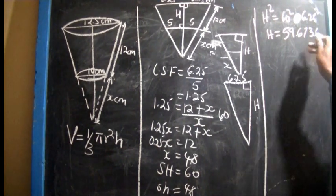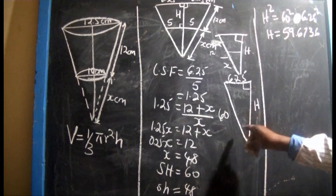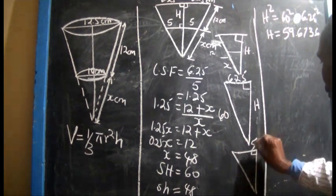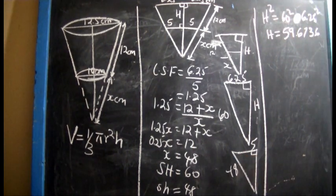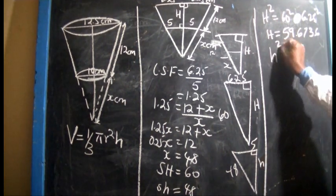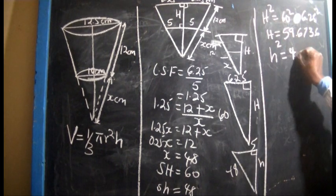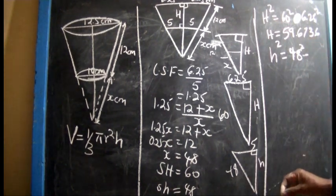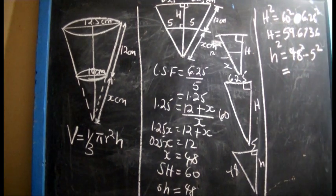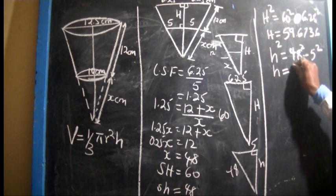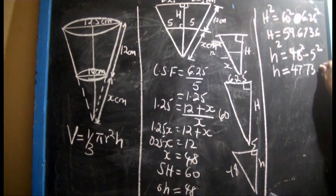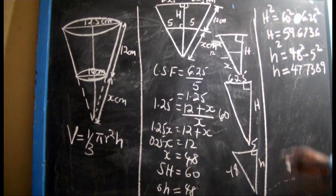Now for the smaller triangle — the radius is 5 and the slant height is 48. Using Pythagoras' theorem: small h squared equals 48 squared minus 5 squared, which gives small h equals 47.7389 centimeters. So that is the height of the small cone.